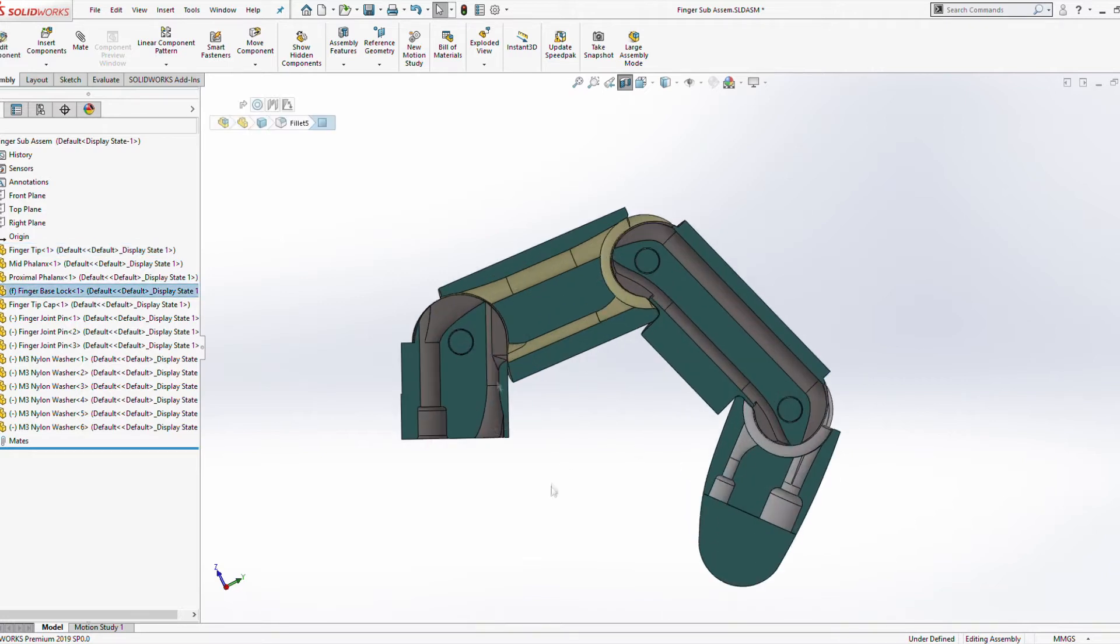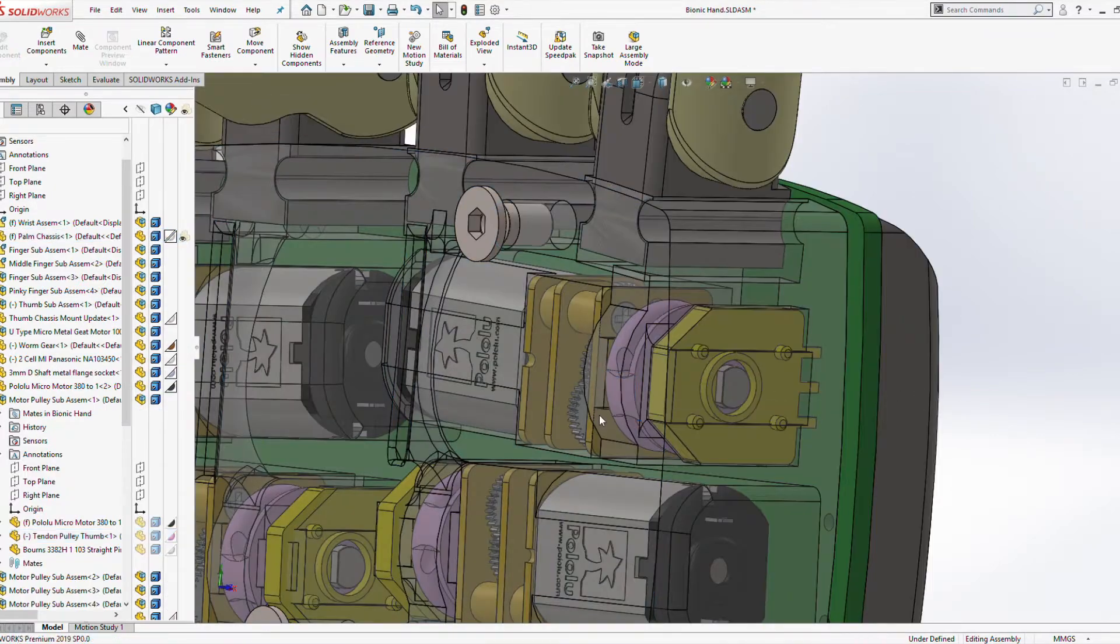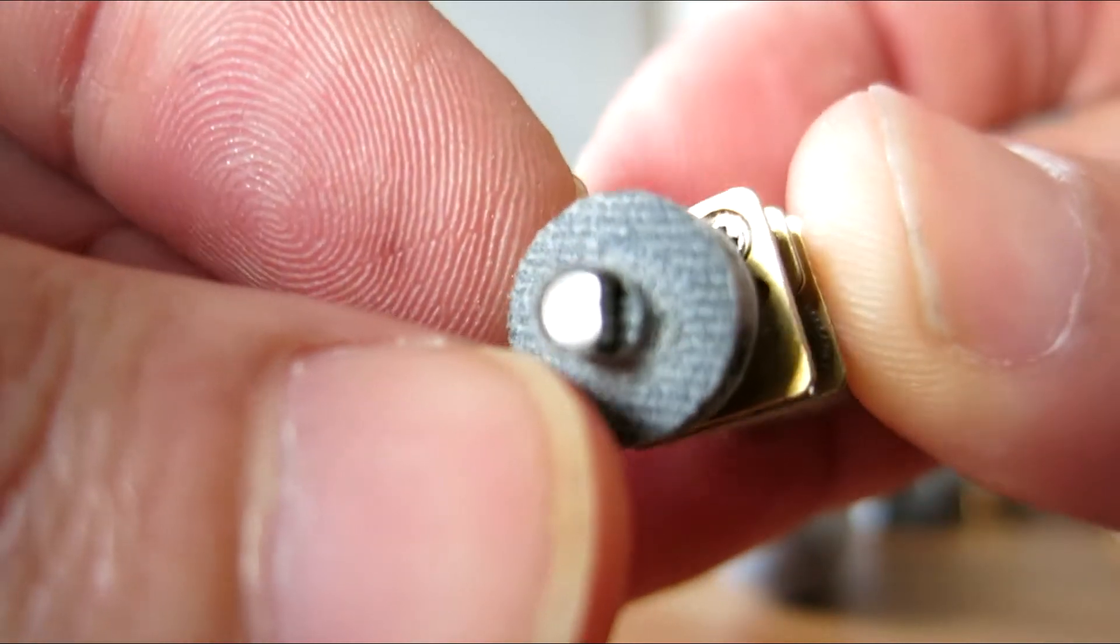And when a motor tensions that, it's going to close or flex the finger. And that flexion will be driven by pulleys which will be attached to the motors in the palm.